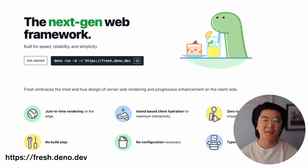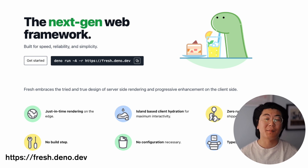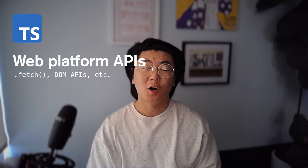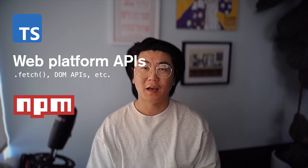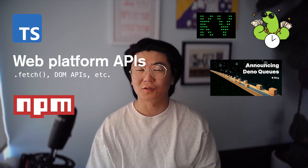If you're new to Fresh, Fresh is a next-generation full-stack web framework which uses server-side rendering and Islands architecture, and sends zero JavaScript to the client by default, which is great for getting perfect page speed scores. Plus, it's built on Dino, so you'll get TypeScript out of the box, web platform APIs, over 2 million NPM modules, as well as DinoKV, DinoKron, and DinoQs. With that out of the way, let's dive in.